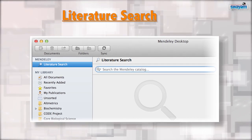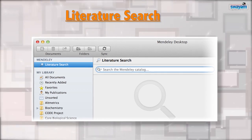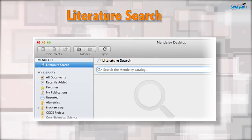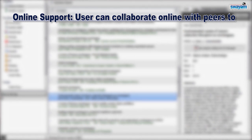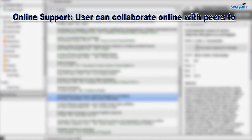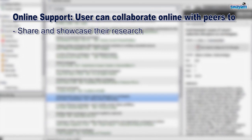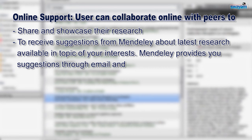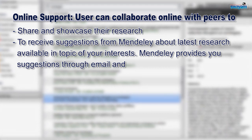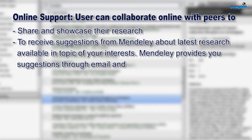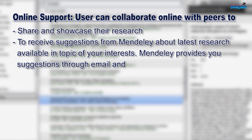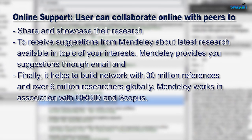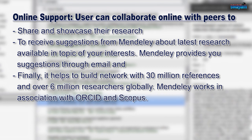Standalone research is a thing of the past — Mendeley now also supports group research. The next feature is Online Support: you can collaborate online with other researchers and peer groups to share and showcase your research, receive suggestions, and explore the latest research in your area of interest. Mendeley also provides suggestions via email and helps you build a network with around 30 million references and over 6 million researchers globally.